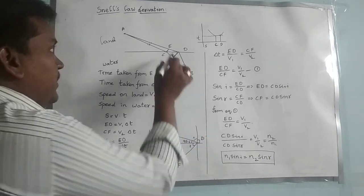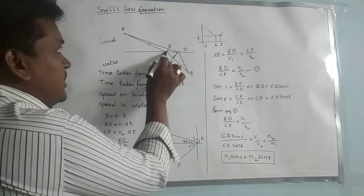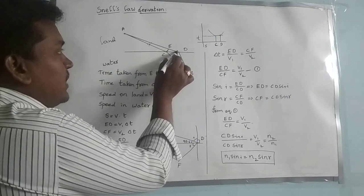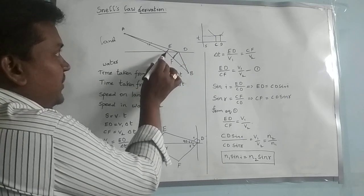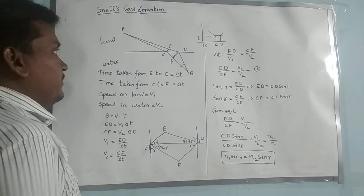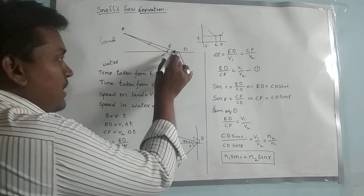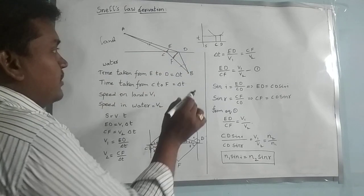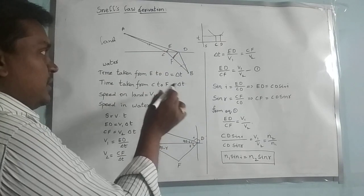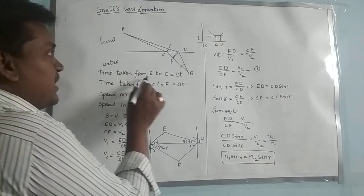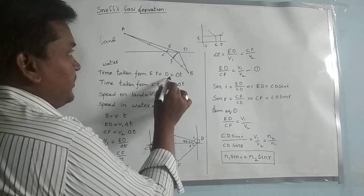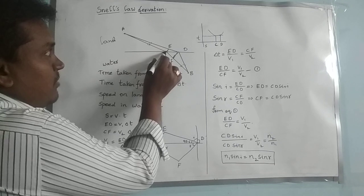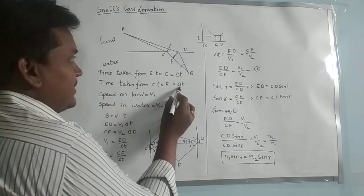So the variation comes at E to D and C to F. Here the variation comes — because E to D is in air and C to F is in water. Now we have to show that E to D and C to F is constant. The time taken from E to D is delta T, and the time taken from C to F is also taken as delta T.